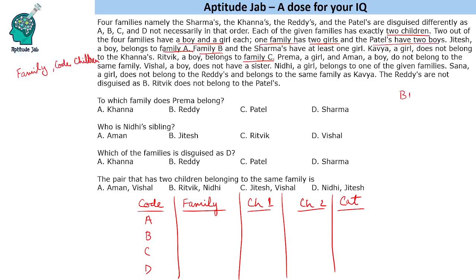We know there is a family which is boy-boy, two families which have a boy and a girl, and one family which has both girls. Another piece of information is that Patels have two boys, so that family is Patels. Based on this information, we will fill in the names as well.